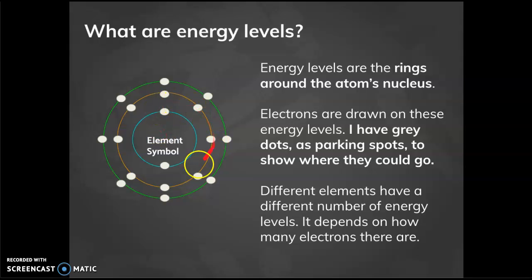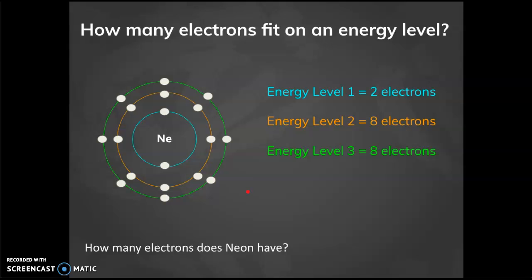So all these parking spots around this really cool place like Target. Now each element, remember, has different properties, like different number of electrons, for example. So if we were to look at one element, like neon, and see where the electrons go, we first have to look at how many electrons can fit on each energy level.